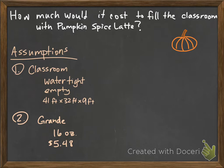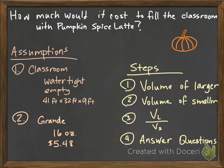Once we have those, then we go through our steps. These are the same steps that we went through in the previous video. The steps are: first, you find the volume of the larger whatever you're dealing with, in this case it's a classroom. Then you find the volume of the smaller thing, in this case our coffee. Then you divide the two, so you divide the volume of the classroom by the volume of the coffee. And then once we have that, that gives us our number of coffees, and then we're going to use that and answer any remaining questions.